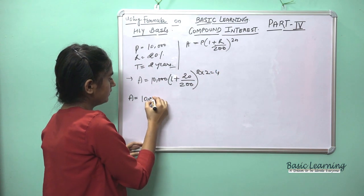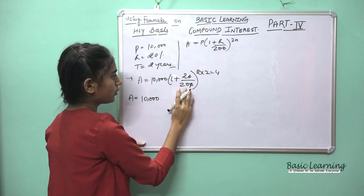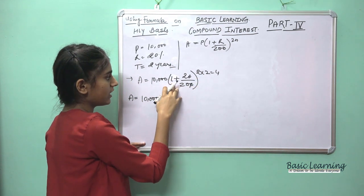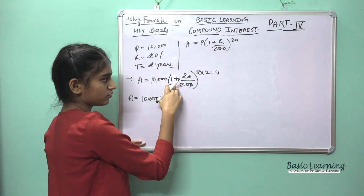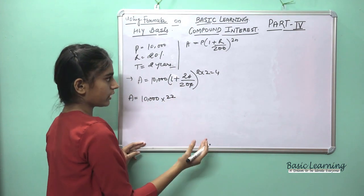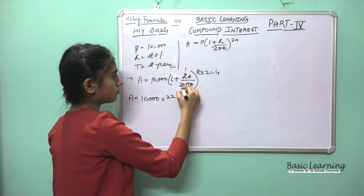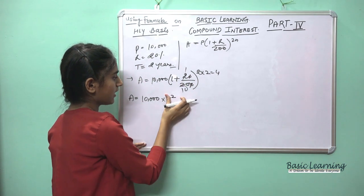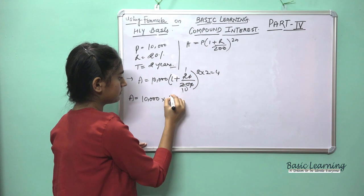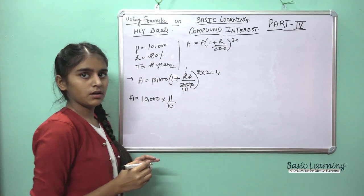We cancel a zero from 10,000 and 200: 20/200 simplifies. Taking LCM: 20 + 2 = 22 upon 20, which further simplifies to 11/10.